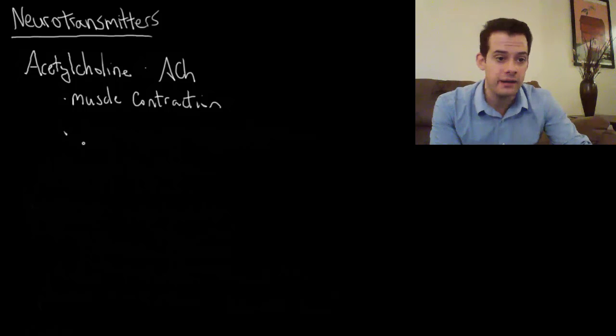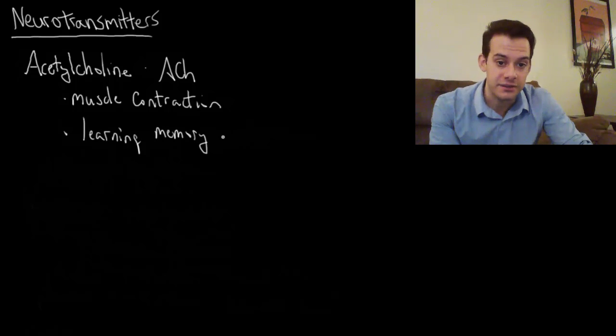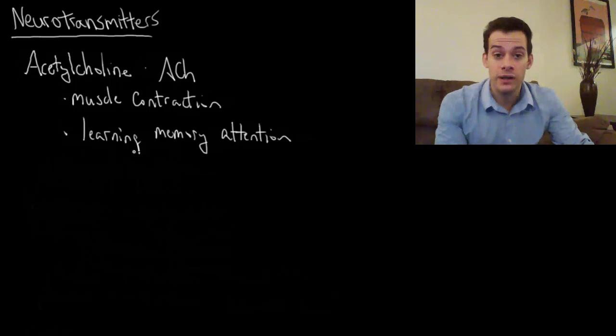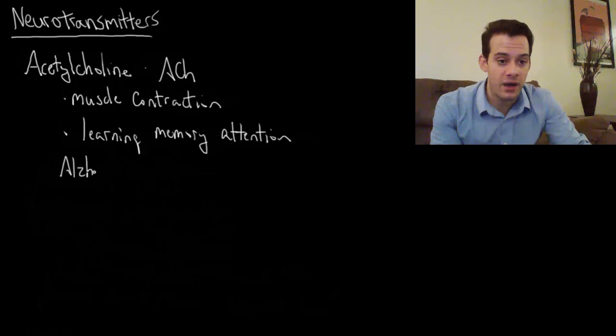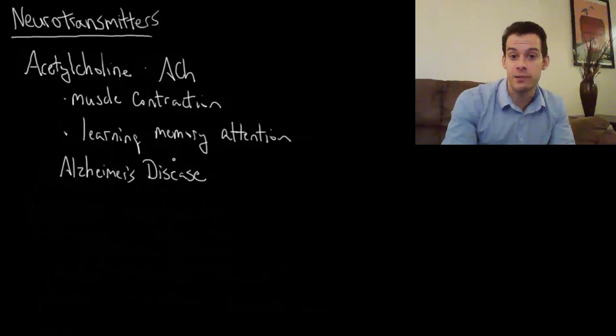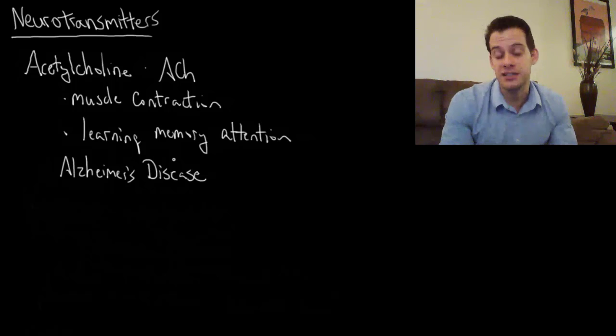But ACH is also used in the brain in areas associated with learning, memory, and attention. One of the ways we can see this role is when we have problems in these areas. One of the things that happens in Alzheimer's disease is the deterioration of neurons. When these acetylcholine producing neurons deteriorate in these areas of the brain, we see that patients have problems with learning, memory, and attention.